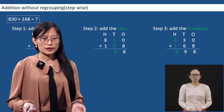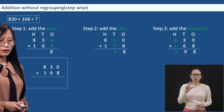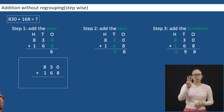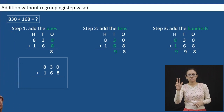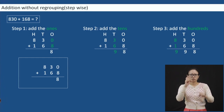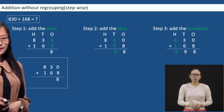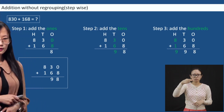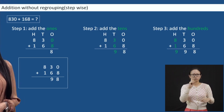Now this is for your understanding, so we will do it without the steps, all together. 830 plus 168: zero plus eight is eight. Tens place: three plus six is nine. And hundreds: eight plus one is nine.